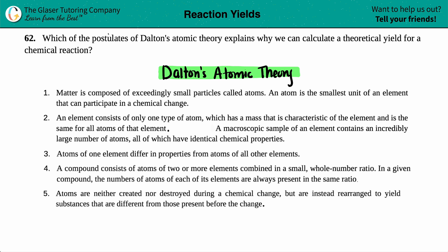Number 62. Which of the postulates of Dalton's atomic theory explains why we can calculate a theoretical yield for a chemical reaction?